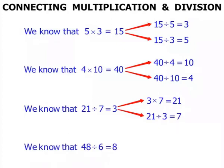We know that 48 divided by 6 equals 8. And from that we could say that 6 times 8 equals 48. And that 48 divided by 8 equals 6.